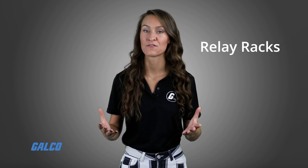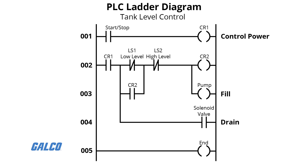Ladder logic resembles ladder diagrams, which were originally a method used to document the design and construction of the relay racks that were used in manufacturing and process control. In this implementation, each device in the relay rack was represented by a symbol on the diagram with connections between those devices shown. Additional external items connected to the rack, such as pumps and heaters, would also be displayed on the ladder diagram.